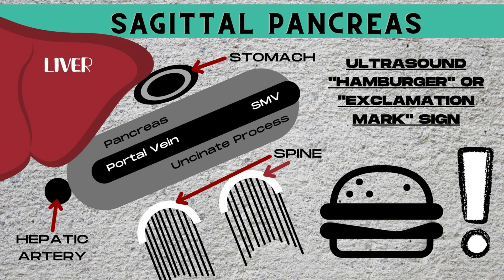If the hepatic artery is visualized, it's the exclamation mark sign, and if the hepatic artery is not visualized, it's known as the ultrasound hamburger sign. The bulk of the pancreas is going to be anterior to the portal vein and the SMV, and then you may or may not see a portion of the uncinate process below the portal vein and SMV.